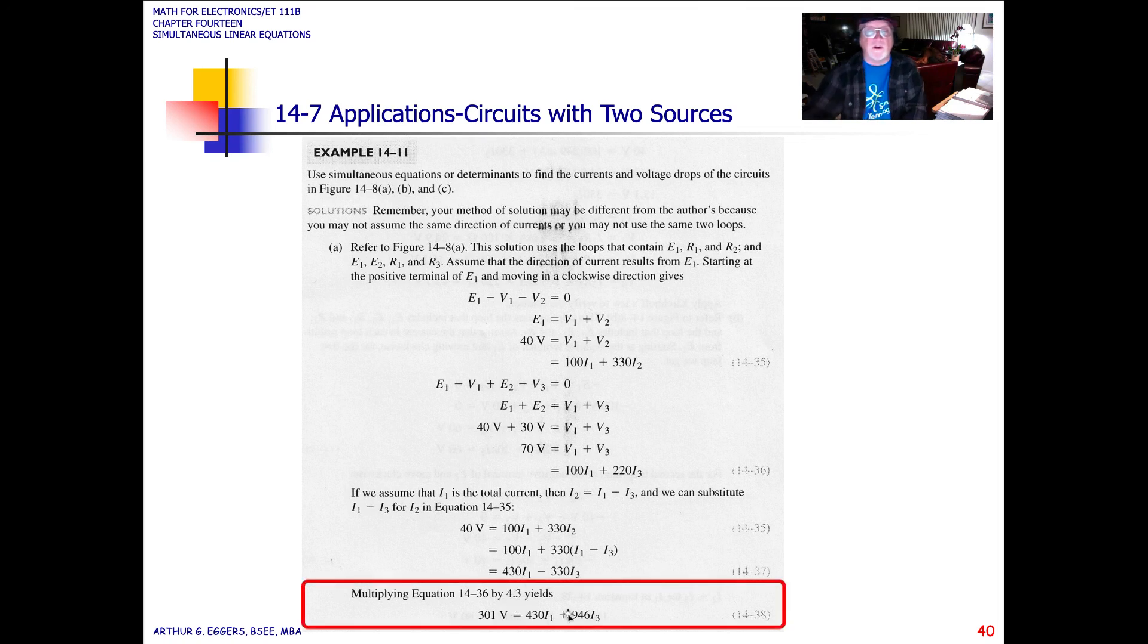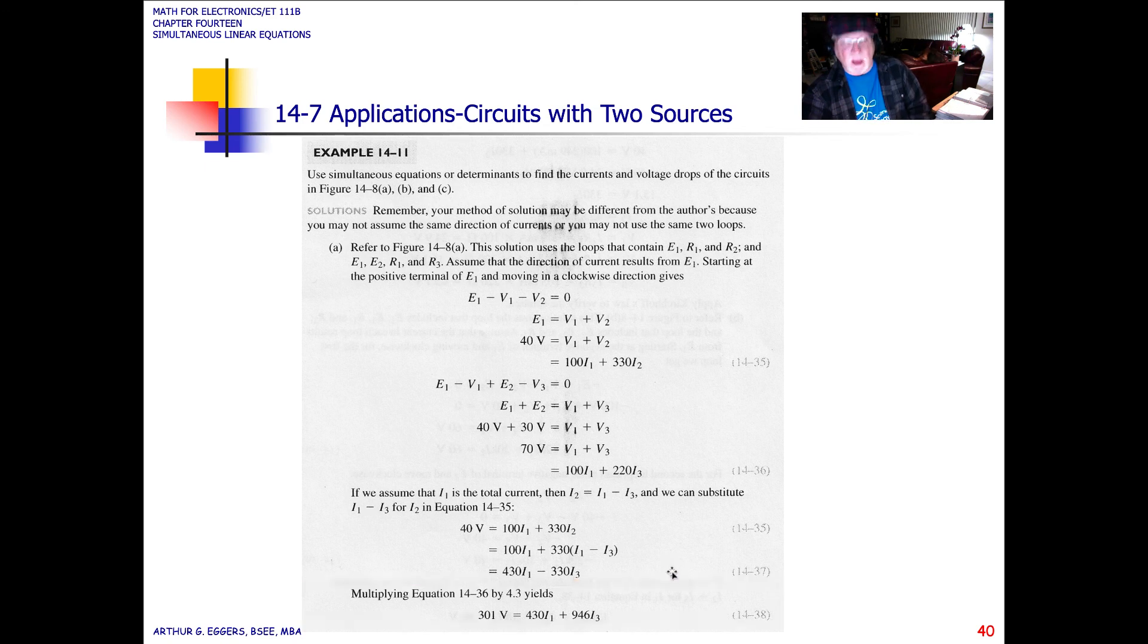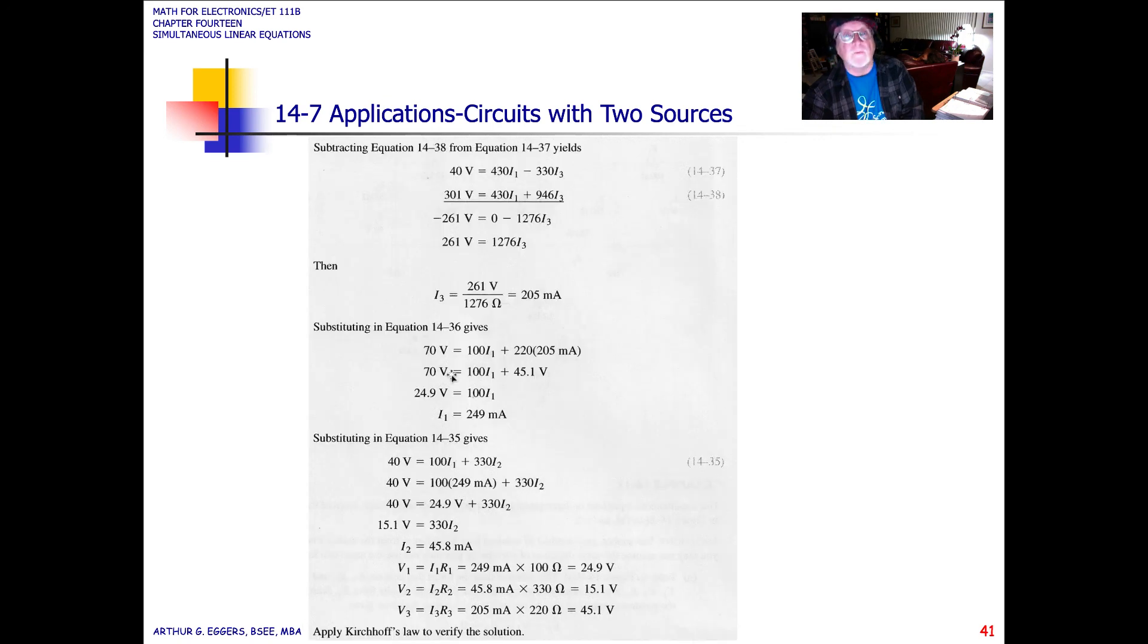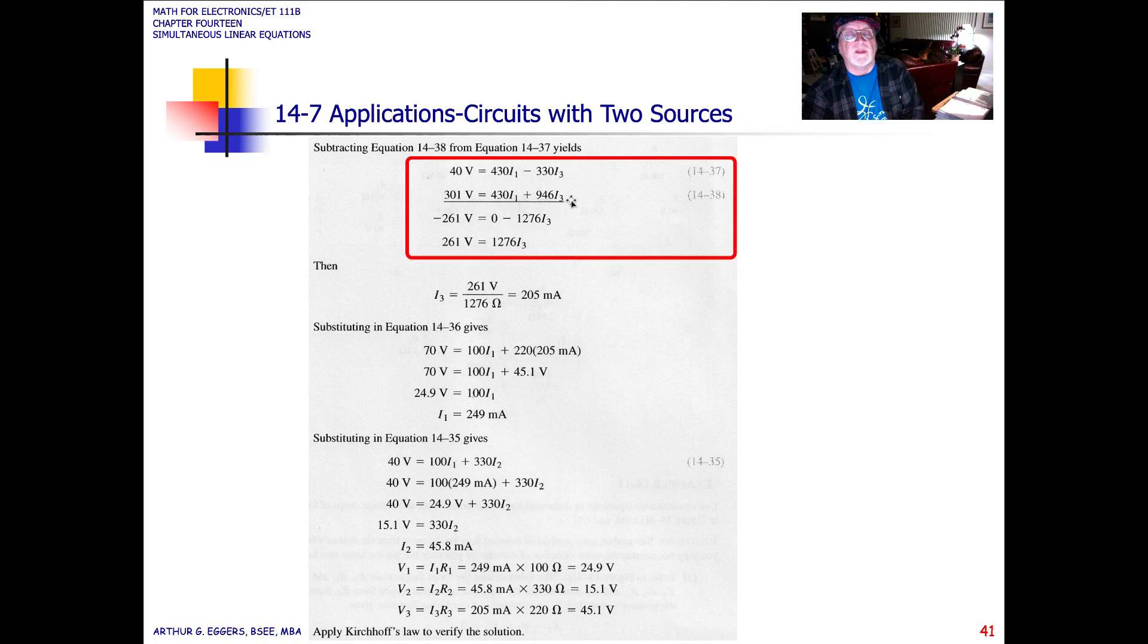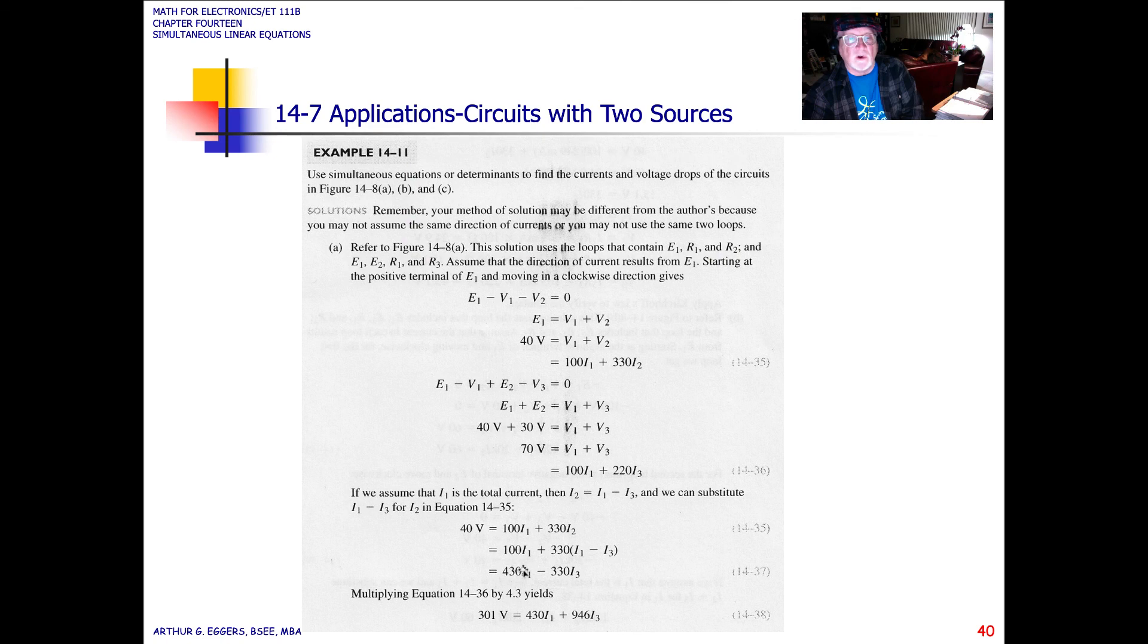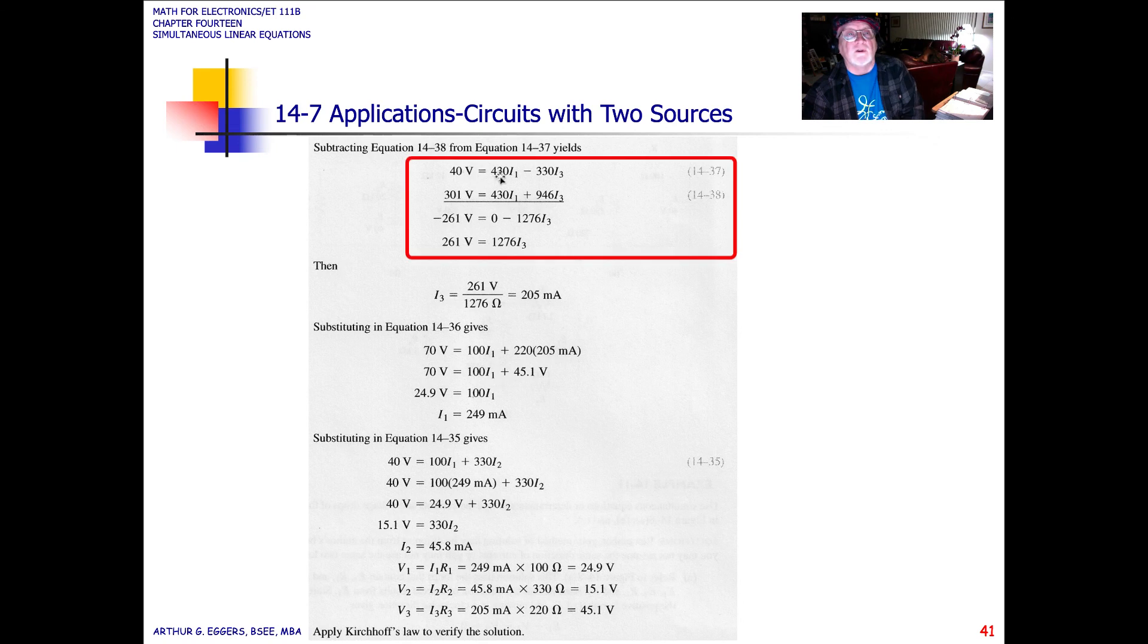Multiplying by 4.3, again, that 4.3 seems like a weird number, but we're just trying to pick a number that allows us to do our substitutions and come up with a value that we can subtract. So the author chose 4.3 when we multiplied through by that value, and we end up with 430 and 430. So we're trying to kill off the 430 term here so that we're only in terms of I3. So 40 volts, 430 minus 330, gives us 100 I1 equals 430 I1 plus 946 I3.